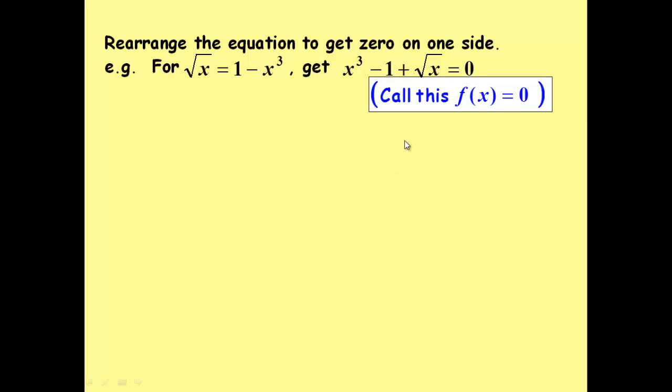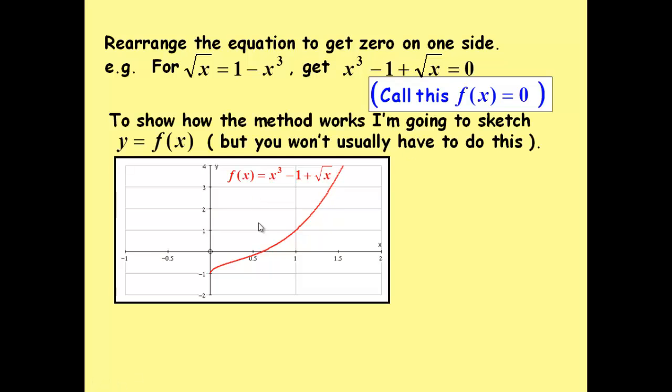In other words, f of x equals 0. And we can see here the point where the two equations met, the x value is actually now the point where we get y equals 0.